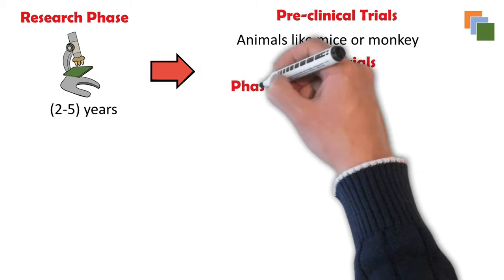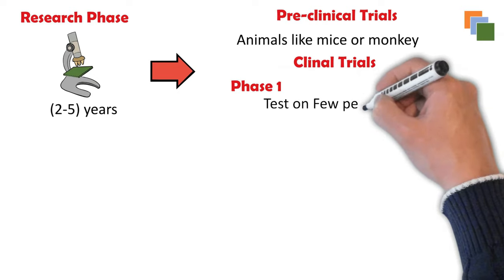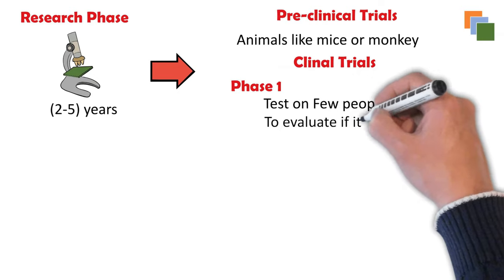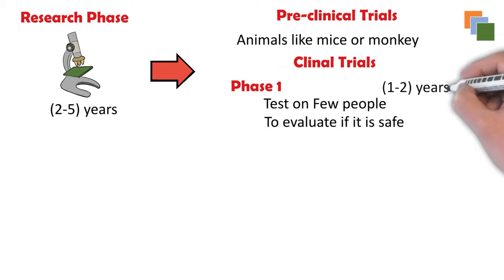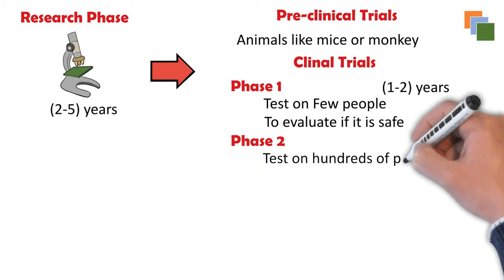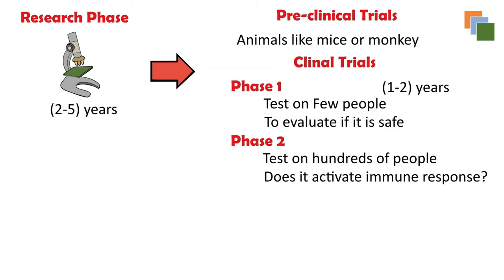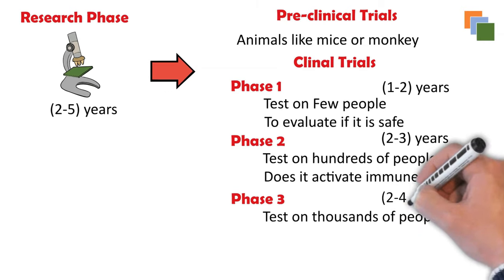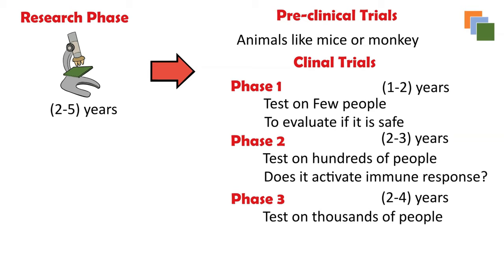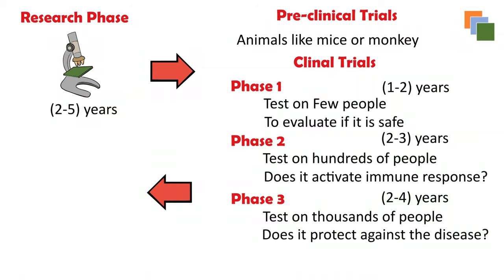Next come the clinical trials, which have different phases. In phase one, the vaccine is tested on a limited number of humans to evaluate its safety and dosage, usually taking one to two years. In phase two, it is tested on hundreds of people for a few months to see if it generates the desired immune response, taking two to three years. In phase three, it is administered to thousands of people over many years to evaluate long-term results and any side effects.